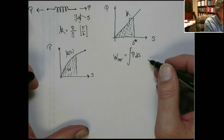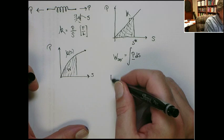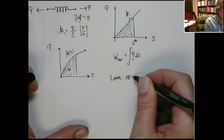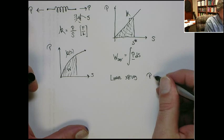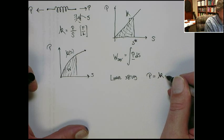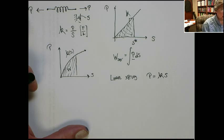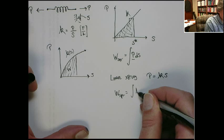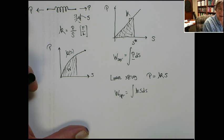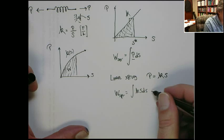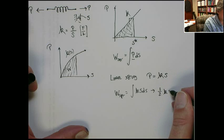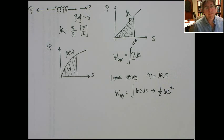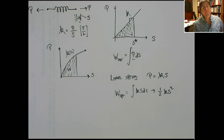If it's linear, we know that the force is always equal to k times s. If I put that in, then the work of the spring becomes the integral of k·s ds. k is a constant, I can pull it out of the integral, and we get that the total work — the integral of k·s ds — becomes one-half k·s², which is the area under the curve. That's the total work done by a linear spring.